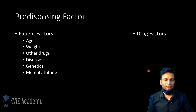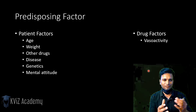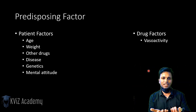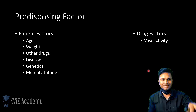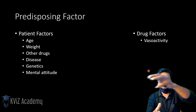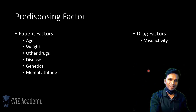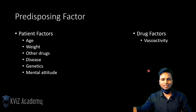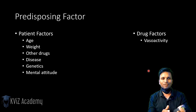Now we come to the drug factors. The first is vasoactivity — the effect of the drug on vessel walls, whether it causes vasoconstriction or vasodilation. LA molecules, specifically amides, by themselves cause vasodilation. This increases blood supply to the injection site, leading to increased and faster uptake of the local anesthetic. So LA by itself causes vasodilation, faster absorption, and that leads to the drug reaching toxic levels faster. The chances of LA overdose are increased when LA is used without a vasoconstrictor.